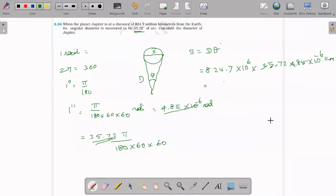If you calculate it, you will have 1.428 into 10 to the power of 5 kilometers. Directly the answer. 1.428 into 10 to the power of 5. This is the diameter of Jupiter.